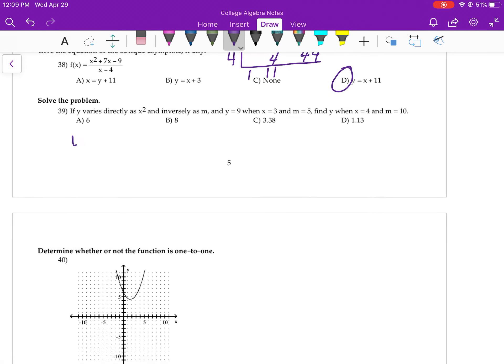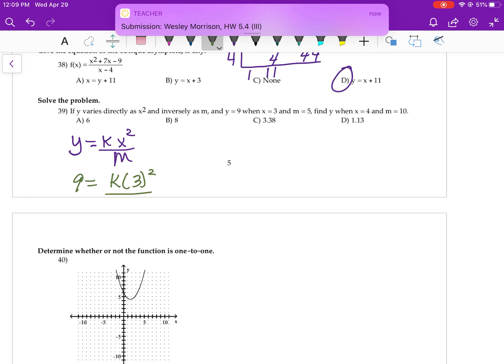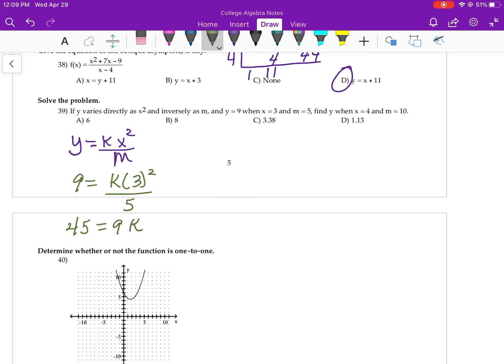39. Y varies directly, so KX squared inversely is M. Plug in what you know. Y is 9, X is 3, M is 5. K is 5.